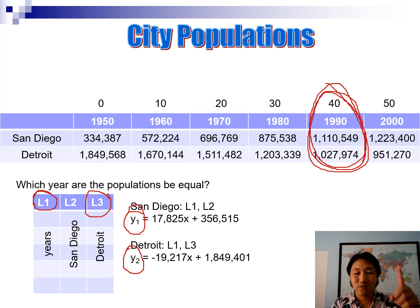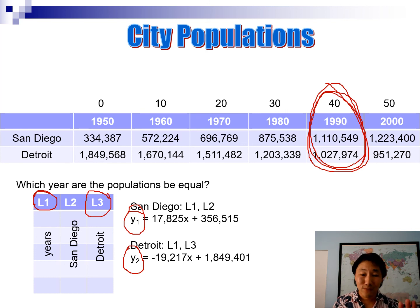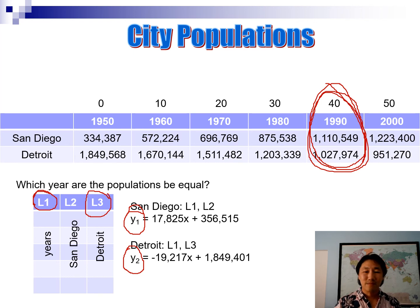The calculator will give you year 40 and the exact population at that point when the two cities were equal. That was a lot of work and a lot of information to enter into the calculator — it's one of the first times we've used it this extensively. If you have any questions, ask in class. Otherwise, have fun with the homework.